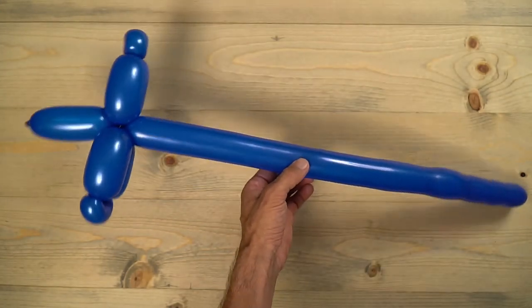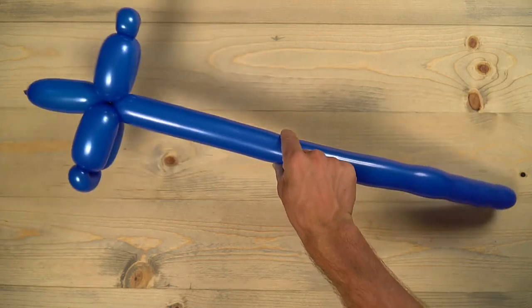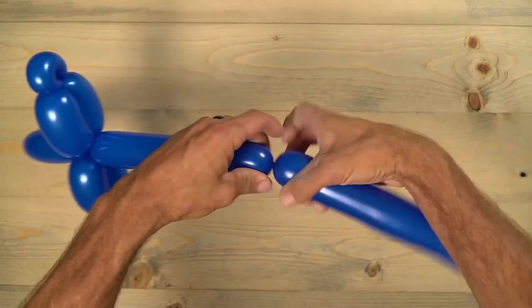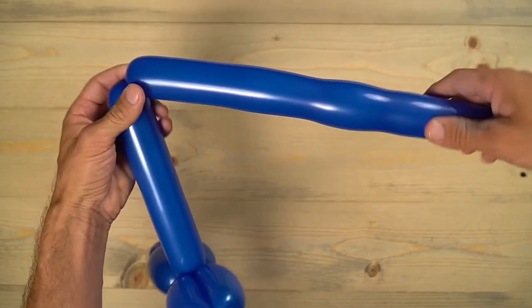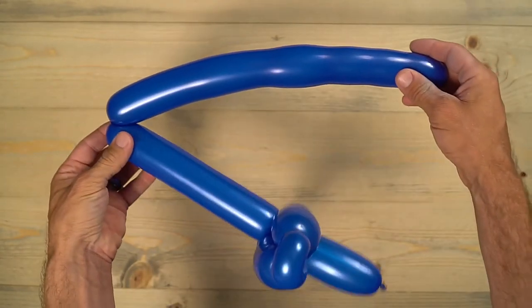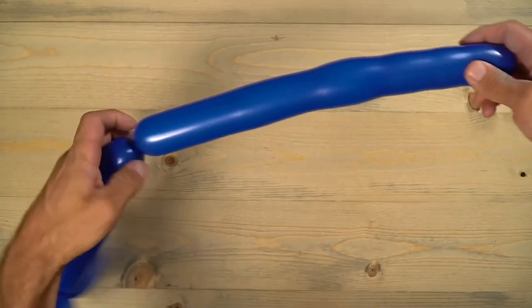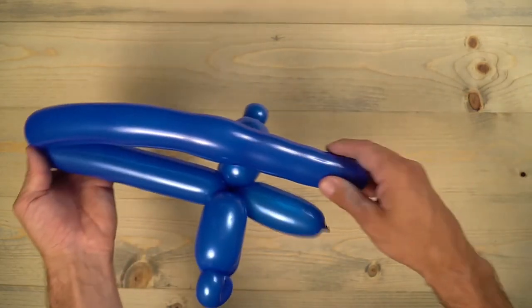So that's what it looks like at this point. And we're going to twist in right there for the top of the shield. So make a twist right there. And then we're going to bring that back around. And that's going to be the handle of the shield right there.